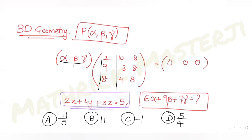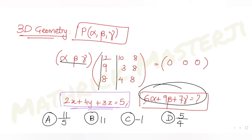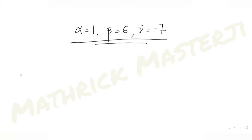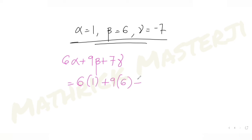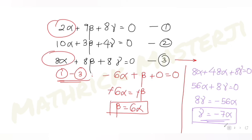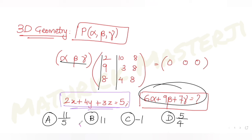Now let's find the final answer. The expression is 6α + 9β + 7γ = 6(1) + 9(6) + 7(-7) = 6 + 54 - 49 = 60 - 49 = 11. The answer choice that matches is option B, so B is the correct answer.